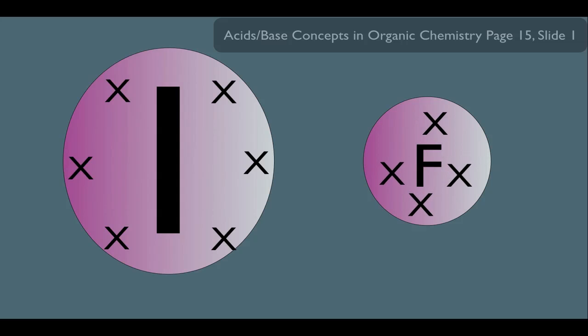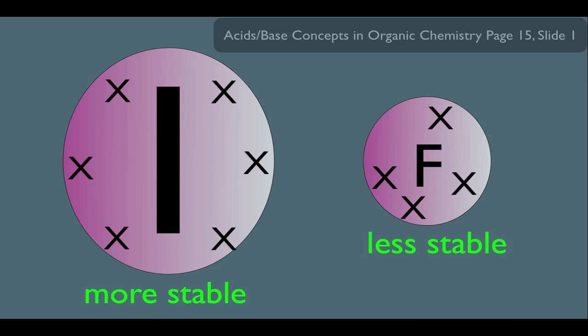Whereas with the F atom, the electrons don't have as much room to get away from each other. That means the I- is more stable and the F- is less stable. This is why the acid HI has the more stable conjugate base.